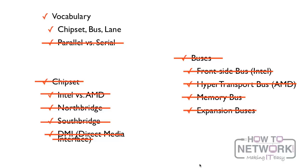To recap this entire video: we talked about certain vocabulary — chipset, being all those chips put together and marketed as one, a set of chips; the bus, which transports data from one place to another; and a lane, which allows for communication in and out.